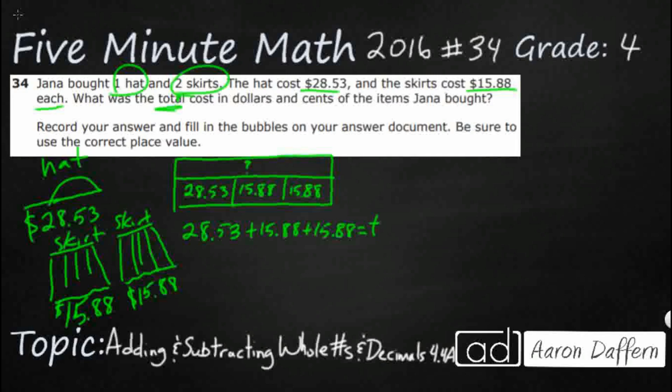Let's do it. Let's add this and make sure we line up our decimals when we're doing it. We're going to get our $28.53, $15.88, and once again, make sure we put that $15.88 down there a second time because she bought two skirts.